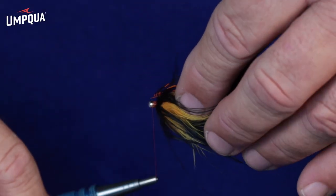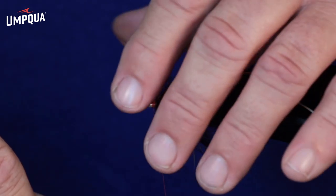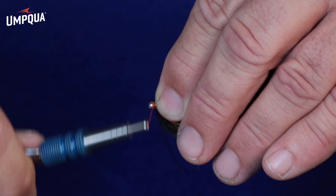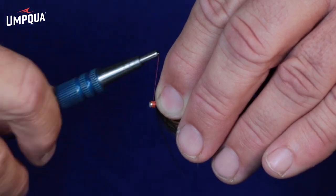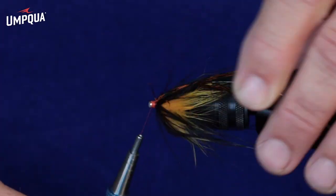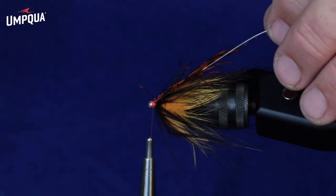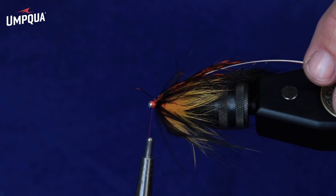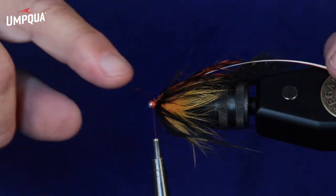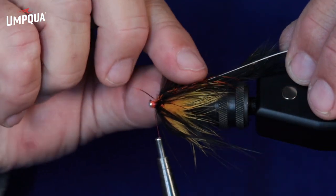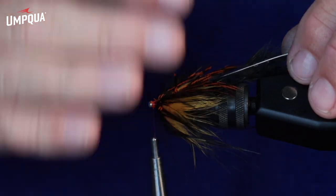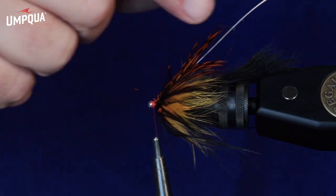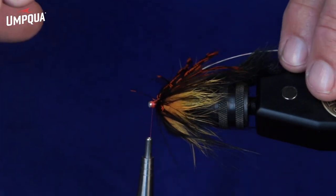And you just take that wedge and lock it right in. A couple firm securing wraps, now you want to make sure when you lock this feather in, that the concave side of the feather is enveloping the fly, so the shiny part of the feather is facing up, and that will ensure that when we start to make these wraps, that they'll all flow backwards.